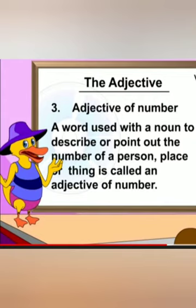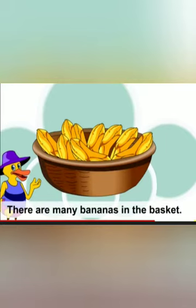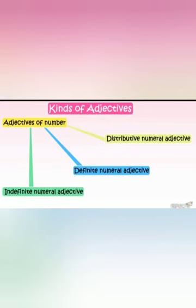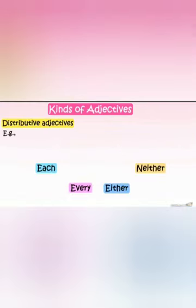Next is adjective of number. A word used with a noun to describe or point out the number of a person, place, or thing is called adjective of number. For example, there are many bananas in the basket. Here, many is an adjective that describes the banana, so it gives the answer of how many. There are three types of adjective of number.